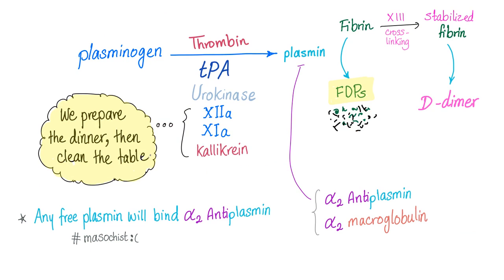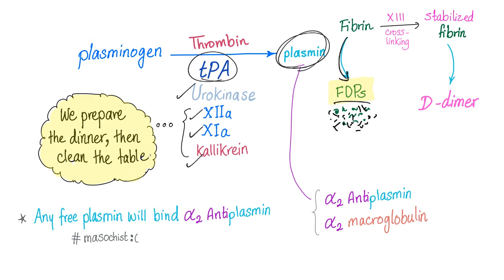Plasminogen is converted into plasmin thanks to TPA, but not only TPA — also urokinase, factor 12, factor 11, and plasma kallikrein. Plasminogen converted into plasmin will convert fibrin into fibrin degradation products, and this same plasmin will convert stabilized fibrin into the D-dimer.